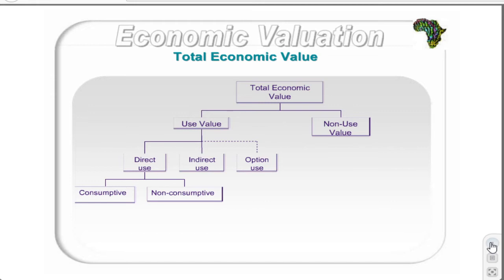Non-use values can be divided into bequest and existence values. Bequest values relate to the desire to protect the environment for future generations, while existence value relates to the value that an individual places on it by virtue of the mere fact that it exists, and not actual or potential future use of it.